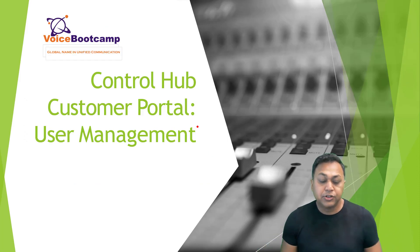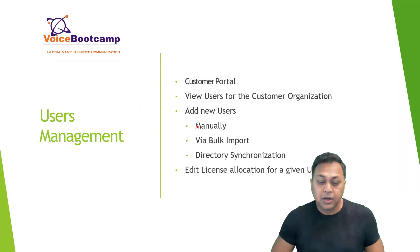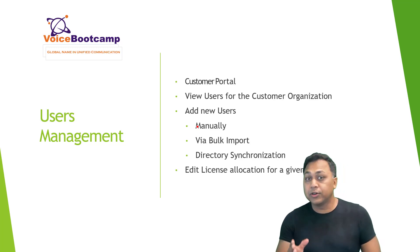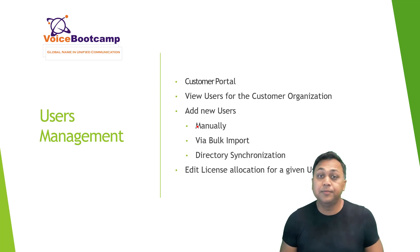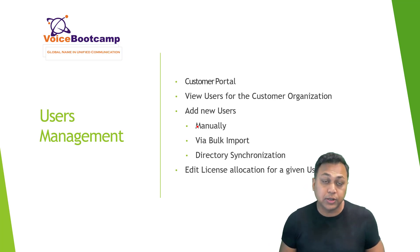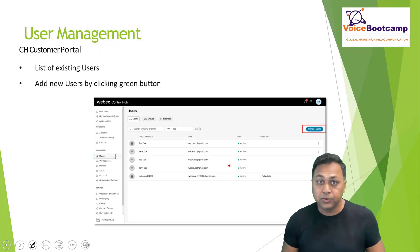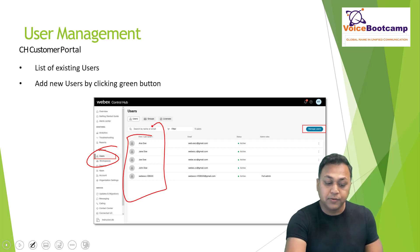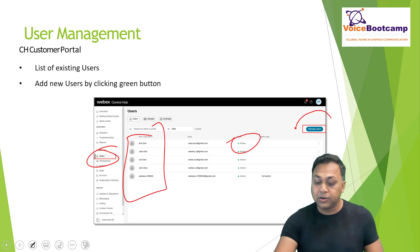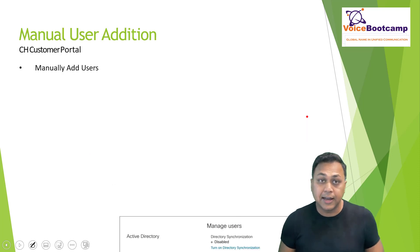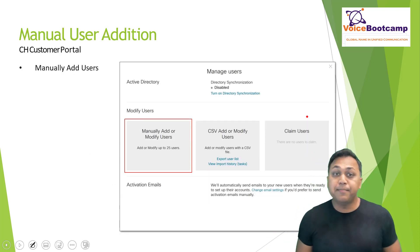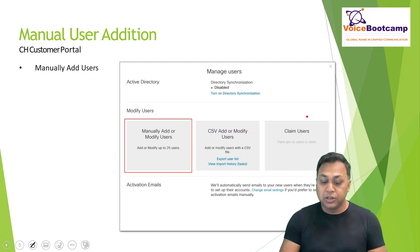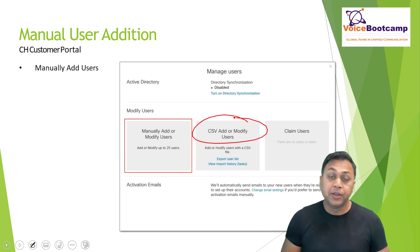Now let's talk about user management from the customer portal. You can view users for that organization, add users manually, use bulk admin via CSV, or use directory synchronization such as Active Directory. You can also edit the license for a given user. All users are listed here, and you can click on the green icon to start taking actions — adding users individually or using a bulk file.